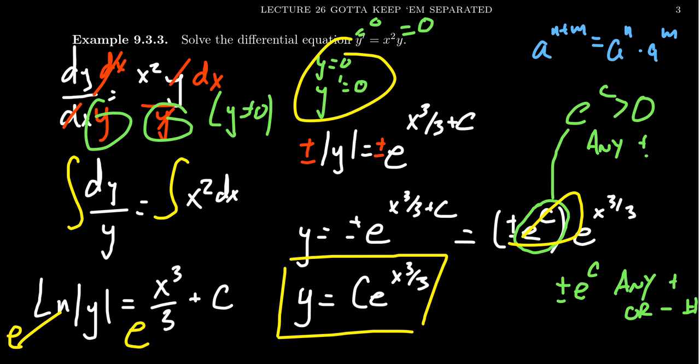There's a little subtlety there, but this situation comes up enough that it's worth knowing: if you get the natural log of y equals something plus c, you'll solve for y and get y equals c times e to that something. This gives us examples of solving separable differential equations using the technique of separation of variables.